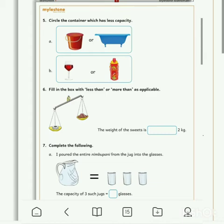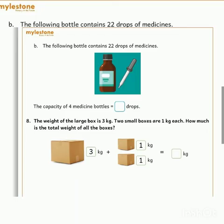The capacity of 3 such jugs is equal to dash glasses. 1 jug is equal to 3 glasses. So 3 jugs is equal to 9 glasses. So fill here 9. Next question.